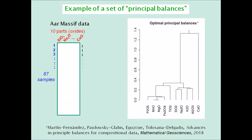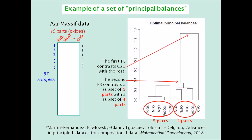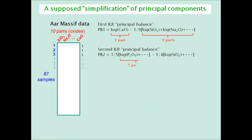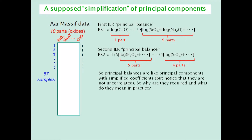Here is a real example: a 10-part dataset of oxides in rock samples from the R-Massif, analyzed by Martin Fernandez and co-authors, who published a binary tree defining nine so-called principal balances. The first one contrasts calcium oxide against all the other parts, and then within that group, the second one contrasts a subset of five parts against the other four. Writing out the log of geometric means as a linear combination of the logs, it is clear that principal balances have a principal component type definition with simpler coefficients. But notice that, unlike principal components, balances are correlated.